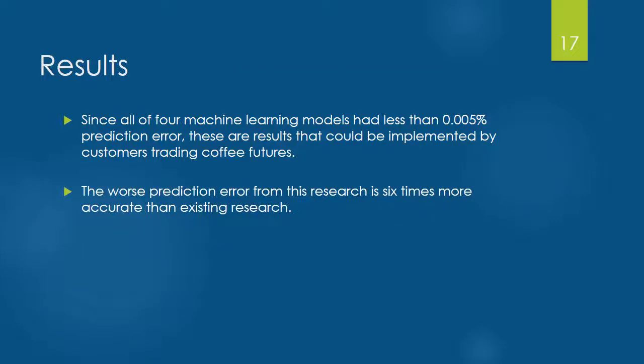All four machine learning models had less than 0.0005 percent prediction error, so these results could be scaled to help predict future daily prices. As previously stated, an important result of this research is that the worst prediction error is more than six times accurate than existing research.